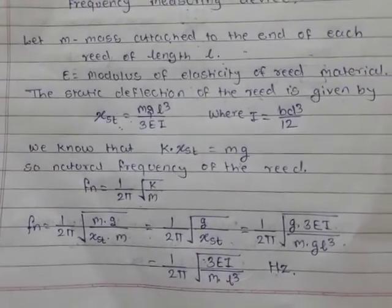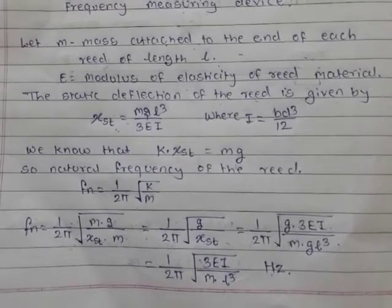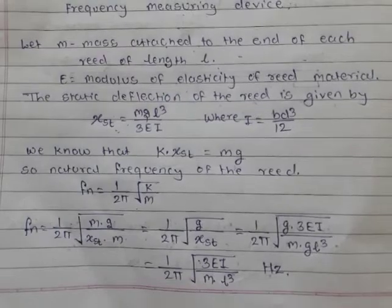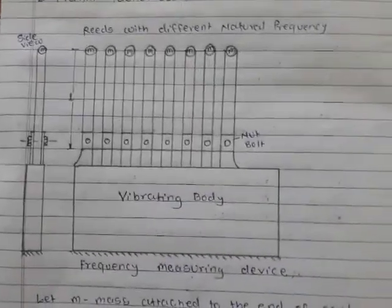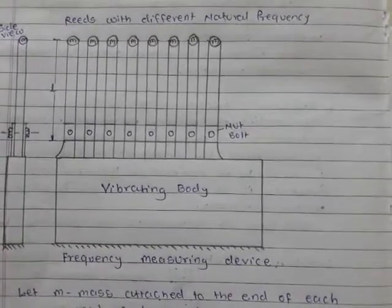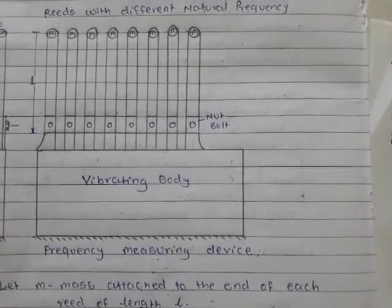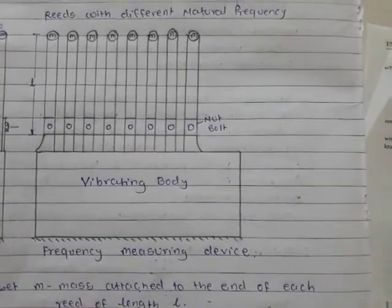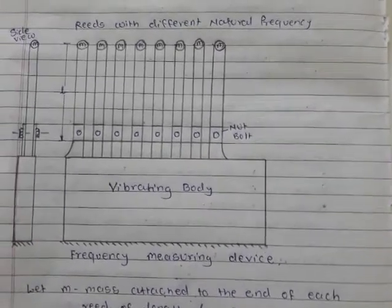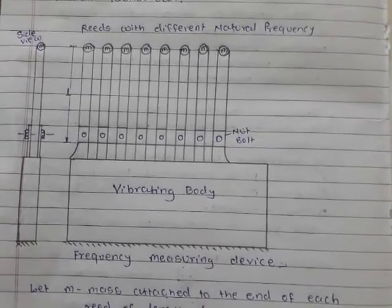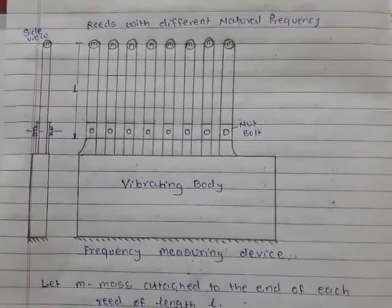Thus, by having different values of m or length of the reed, we can have a series of reeds with definite known frequencies. The one which has a frequency equal to the natural frequency of the vibrating body vibrates with a large amplitude. Thus, the frequency of the vibrating body can be determined easily by knowing the reed with maximum amplitude. The accuracy of the instrument depends upon the difference between the values of the natural frequency of the successive reeds. Thank you.